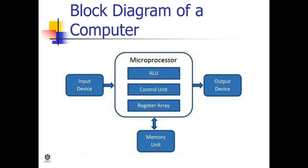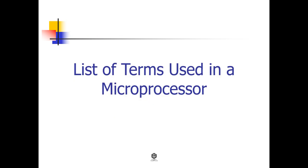A microprocessor accepts binary data as input, processes the data, and then provides output based on the instructions stored in memory. The data is processed using the microprocessor's ALU (arithmetic and logical unit), control unit, and register array. The register array processes data through a number of registers that act as temporary memory locations. The flow of instructions and data through the system is managed by the control unit.